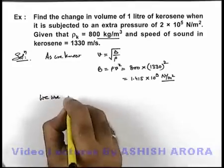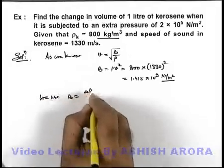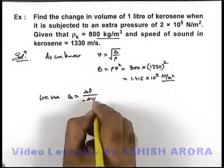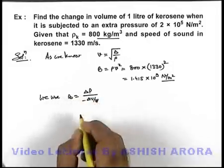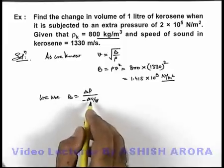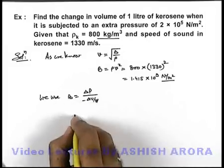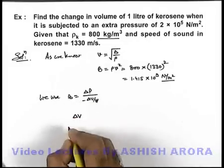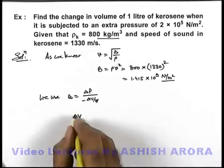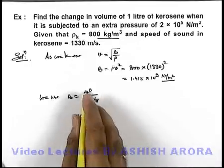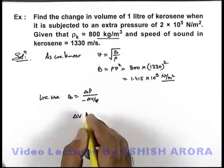And we use bulk modulus as excess pressure divided by volume strain. In this situation we can easily calculate the change in volume, or the volume which is compressed due to applied excess pressure ΔV.